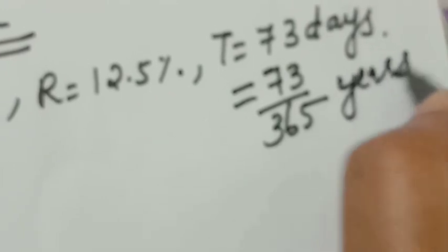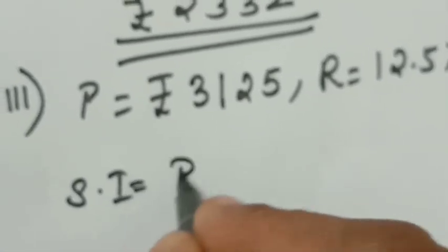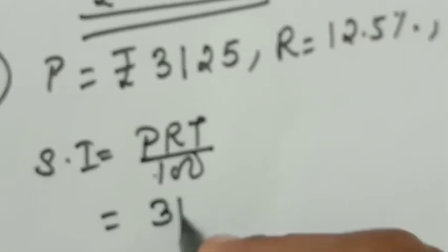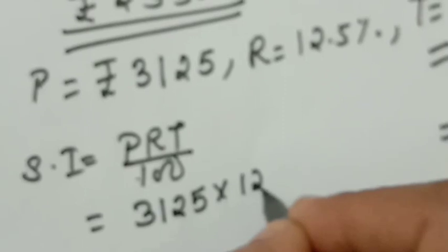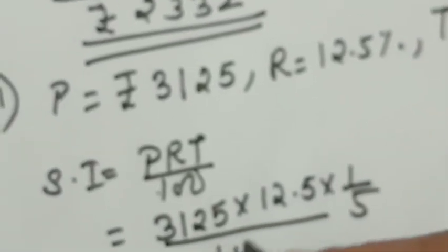73 divided by 365 — cut it. You will get 1/5 years. Now you have to put it in the formula. Simple Interest equals PRT by 100, with values 3125 into 12.5 into 1/5 divided by 100.